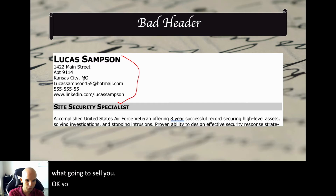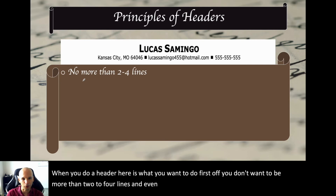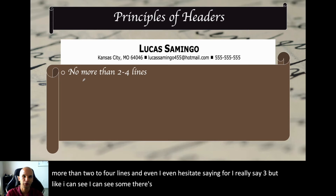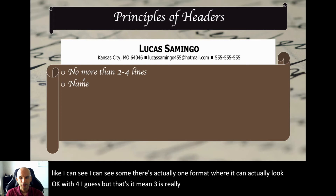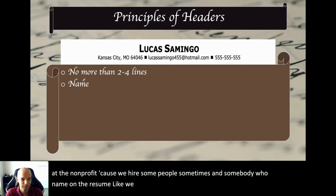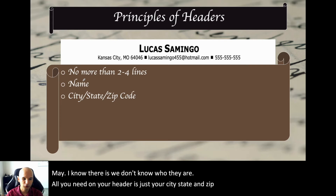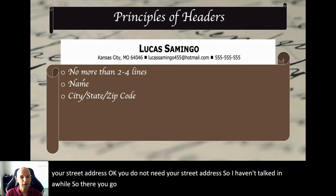So this is a bad header — don't do this. When you do a header, you don't want it to be more than two to four lines — really my max is three. Here's what you include: your name, of course. All you need for your address is just your city, state, and zip code. You do not need your street address. They're not going to mail you anything — it'll be with your application anyway. All the employer really needs to know is just whether you need to relocate. Are you within driving distance? That's all they care about with city, state, and zip code.